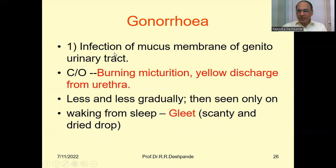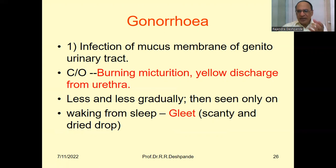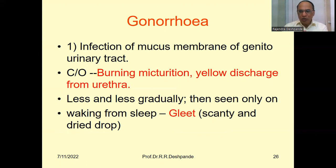Gonorrhea is an infection of the mucous membrane of the genitourinary tract. The patient will complain of burning on micturition — a lot of burning in the urethra while passing urine. Then there is yellow discharge, that is pus, from the urethra. These two symptoms are very irritating to the patient, so the patient cannot hide this disease.